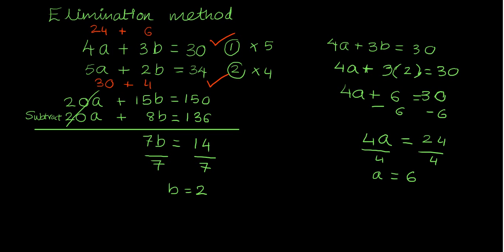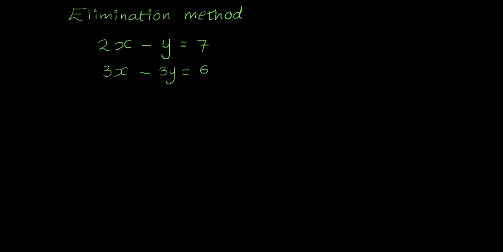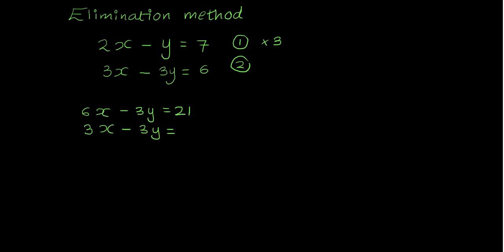Let's look at the final example. I'll label the equations number 1 and number 2. This time I'll make the y coefficients the same, which saves time on multiplying. I'll only multiply the first equation by 3: 2x times 3 is 6x, minus y times 3 is minus 3y, and 7 times 3 is 21. I'll leave the second equation as it is. The absolute values of the y coefficients are now the same, and the signs are also the same, so I'll subtract.